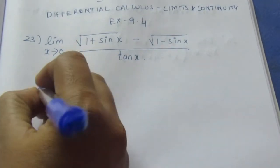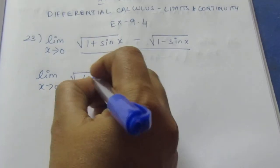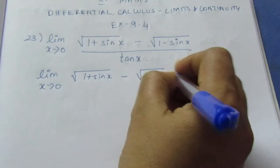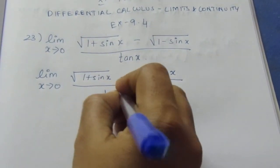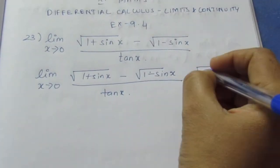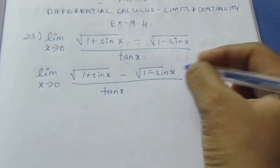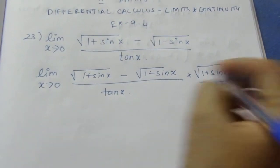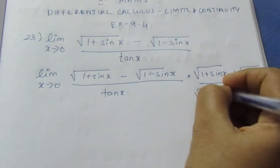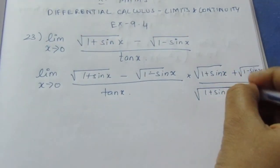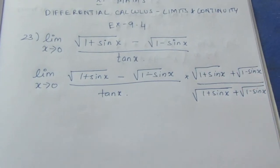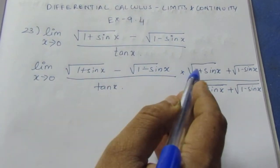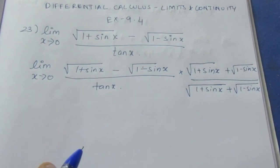Limit extends to zero. We have root of (1 plus sin x) minus root of (1 minus sin x). We multiply by the conjugate: root of (1 plus sin x) plus root of (1 minus sin x), over the same. Now we have to multiply. This is the conjugate form: (a + b)(a − b), which gives a squared minus b squared.